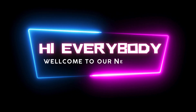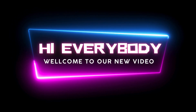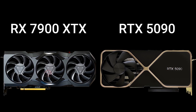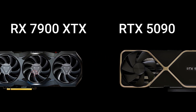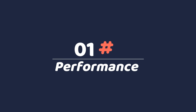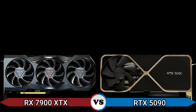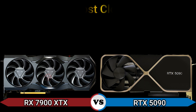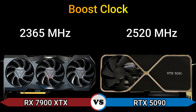Hi everybody, welcome to our new video. Today I will compare two GPUs in this video, so let's go. Enjoy this video. Firstly we start with performance: base clock 1929 MHz and 2235 MHz, boost clock 2365 MHz and 2520 MHz.